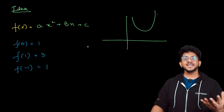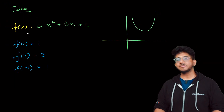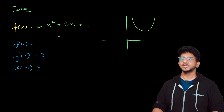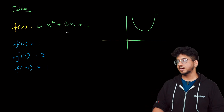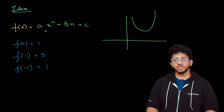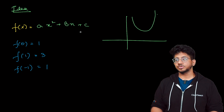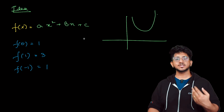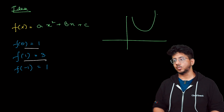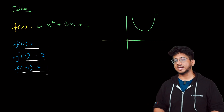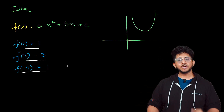The main idea that Lagrange interpolation uses is: you have a function f(x) equal to ax² + bx + c, a standard quadratic, but you don't know what the function is actually about — you don't know the constants a, b, c. But you are given certain values like f(0) = 1, f(1) = 3, f(-1) = 1. Can you find out the polynomial?